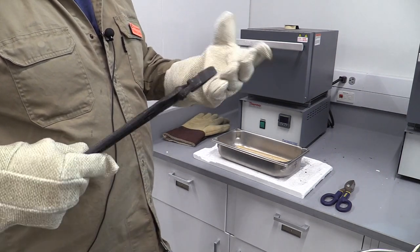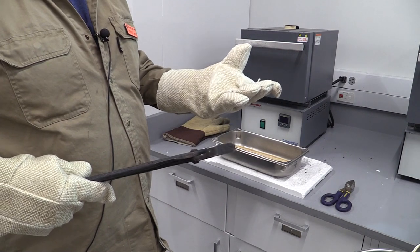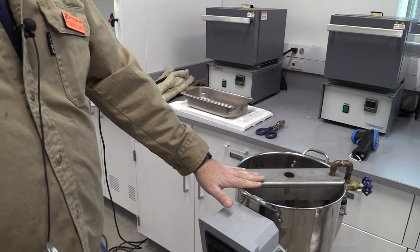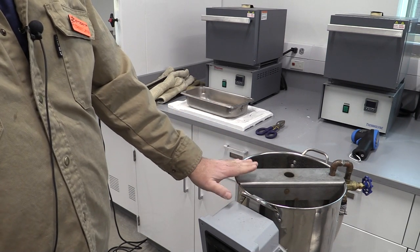What's going to happen is that paper is going to burn off and create a protective atmosphere inside. While the part is soaking in the furnace at temperature, you can come over and adjust and learn how to use the Jominy quench stand.